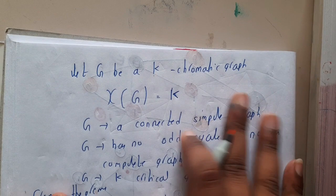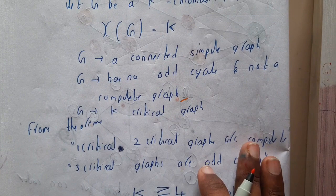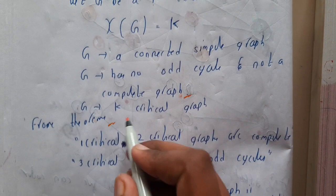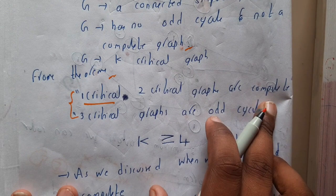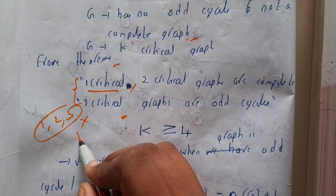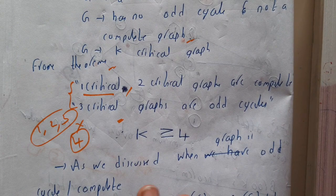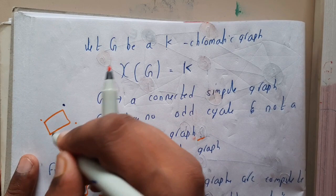Similarly, another example was colored with three different colors and the maximum degree is also three. There are a few more conditions: let G be a k-chromatic graph where k is the chromatic number, χ(G) = k, G is a connected simple graph with no odd cycle and not a complete graph, and G is a k-critical graph. One-critical graphs have only a single vertex, two-critical graphs are complete graphs, and three-critical graphs have odd cycles. So from k greater than or equal to four, this theorem can be applied.